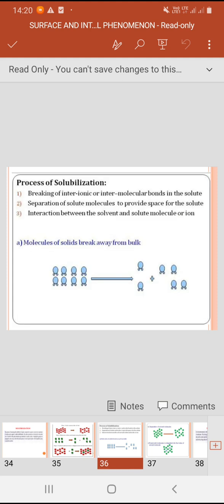Now the process of solubilization. First is breaking of interionic or intermolecular bonds in the solute, as we have seen in the diagram. Second step, separation of solvent molecules to provide space for the solute. Third step, interaction between solute and solvent molecules. First, the bonds in the solute break.